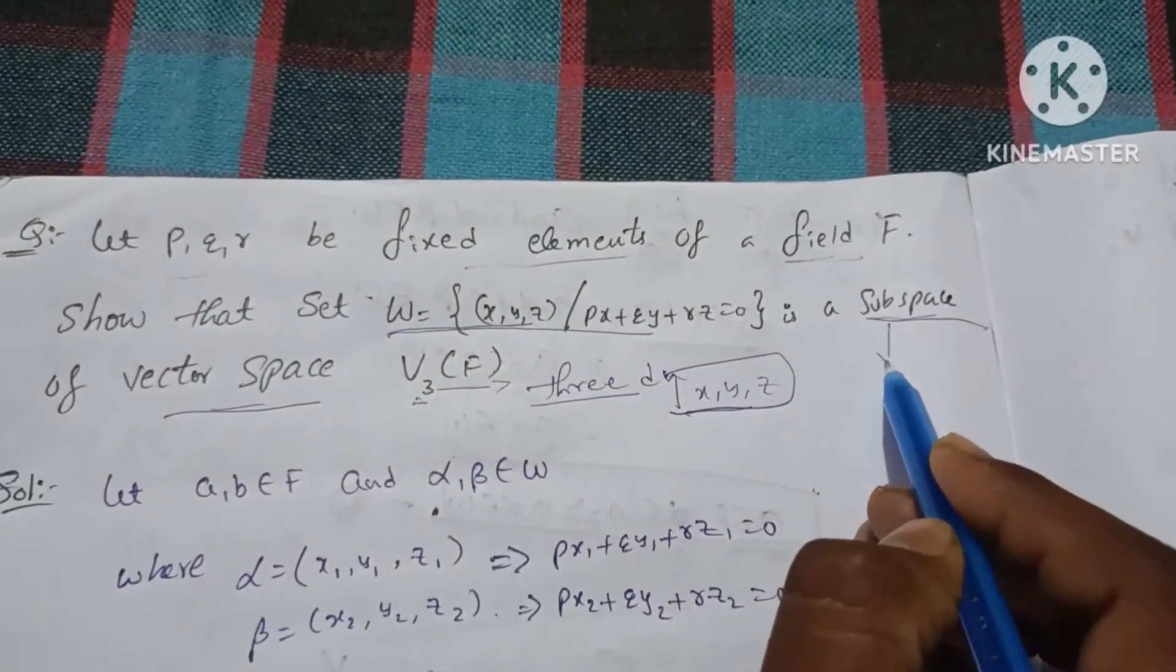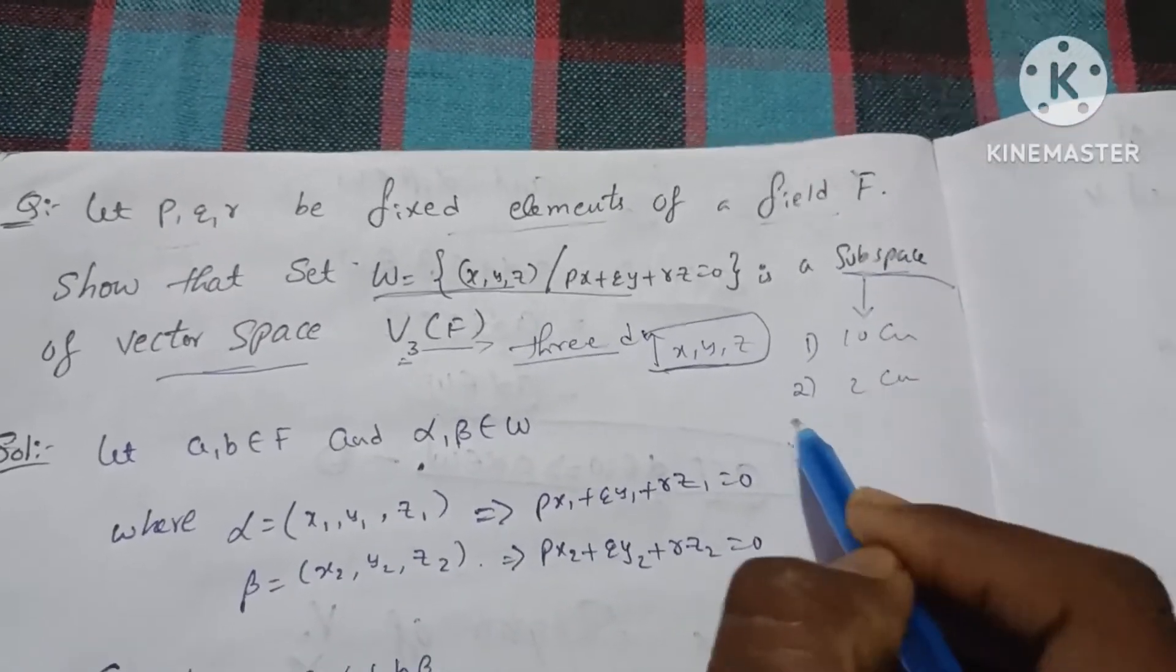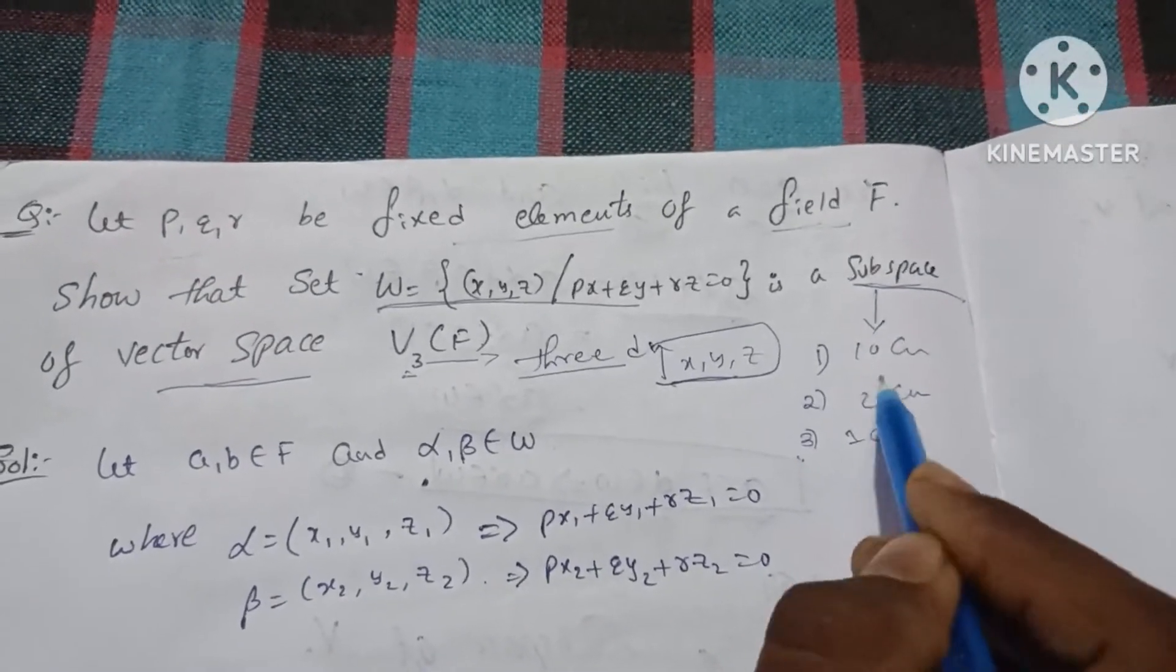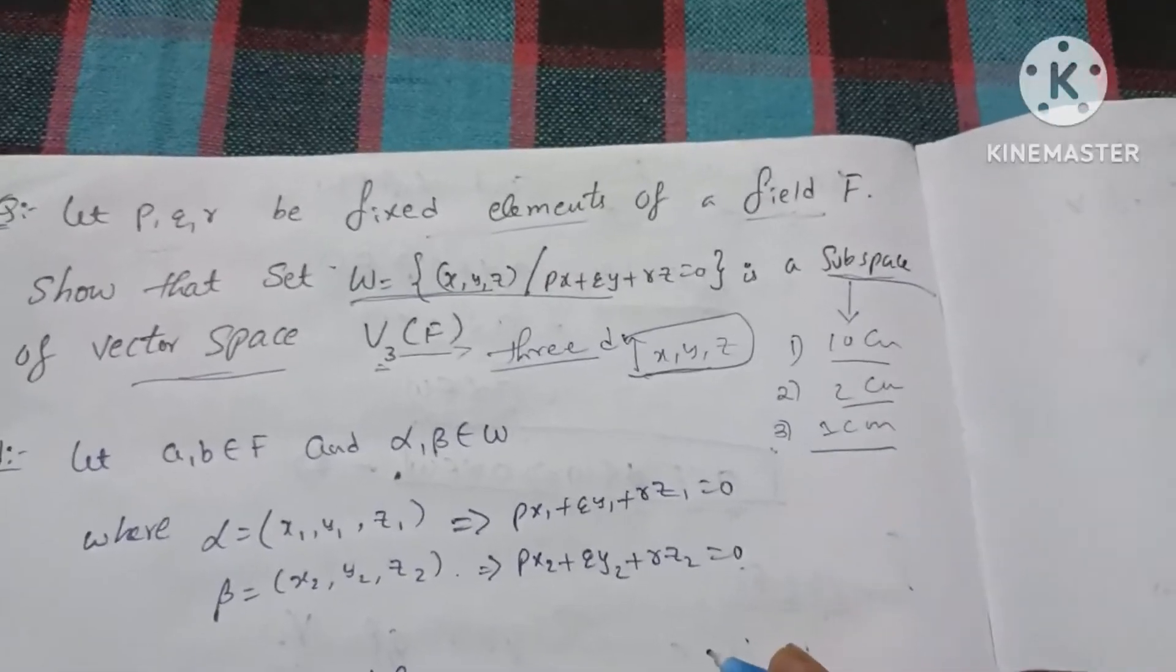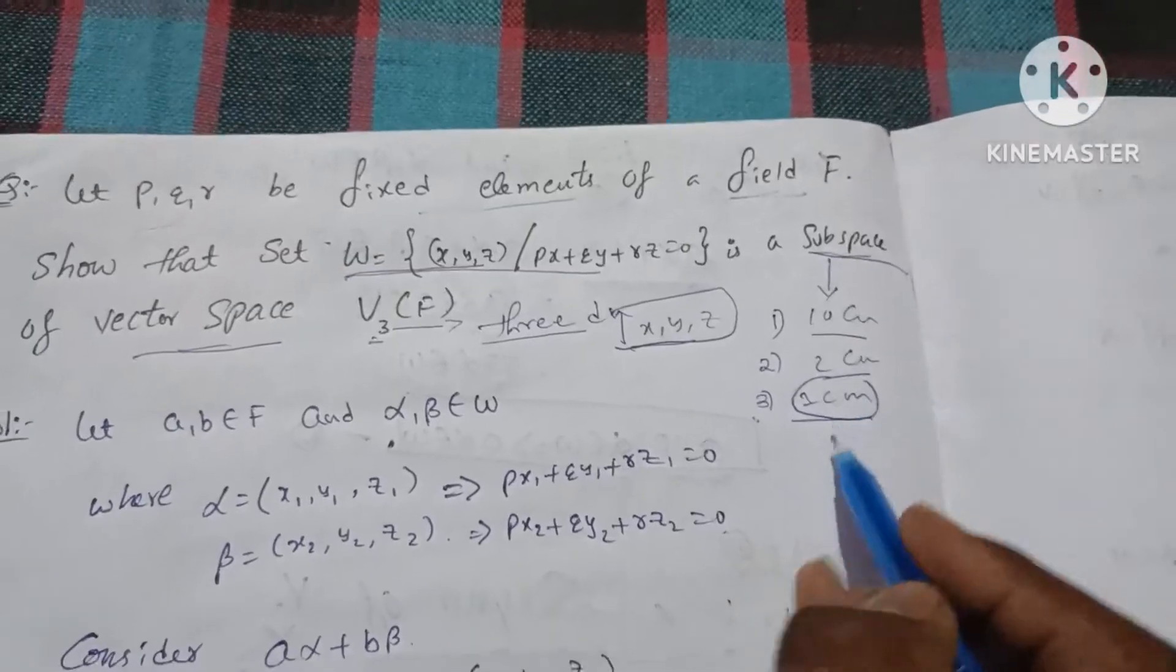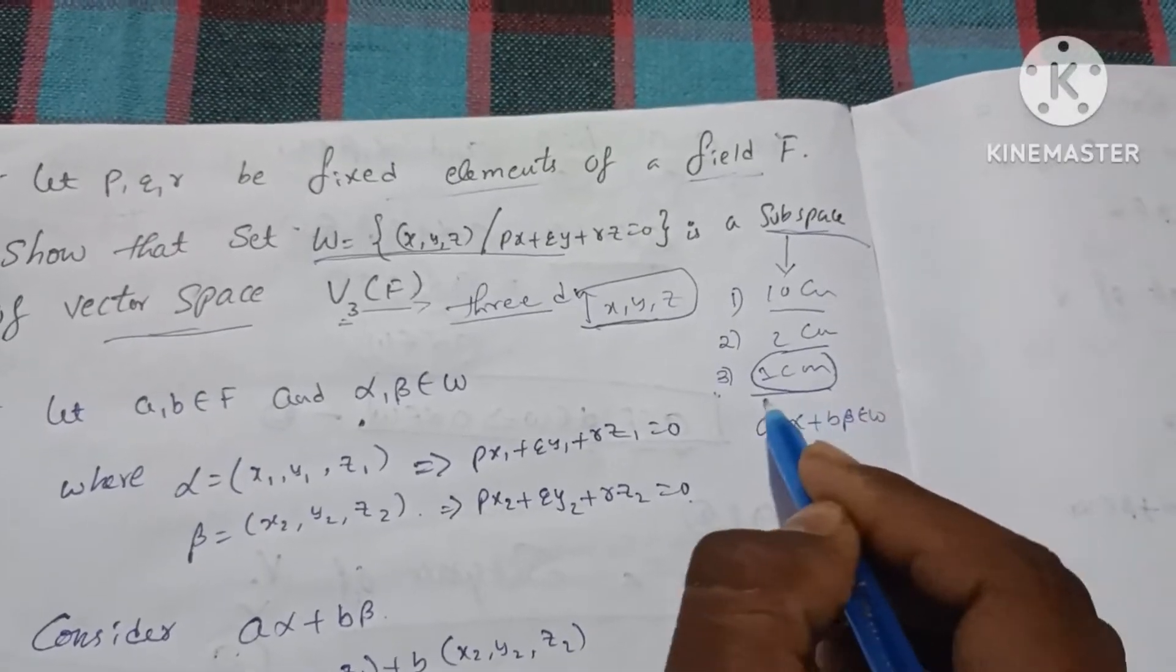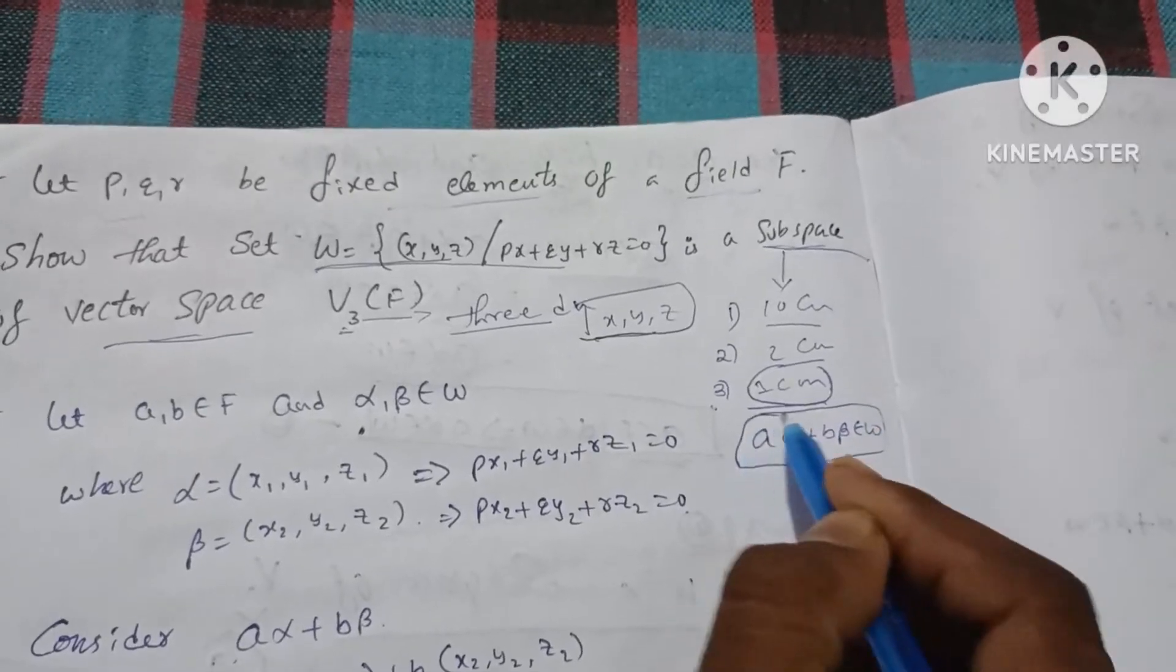So let p, q, r be fixed elements of field F. First, 10 conditions; second, 2 conditions; third, single condition. The first place is studied in a way that we will prove. If you have a problem, you will repeat it in 5 marks with one condition. Last, if you have a alpha plus b beta belongs to W condition, and this condition will be proved for subspace.